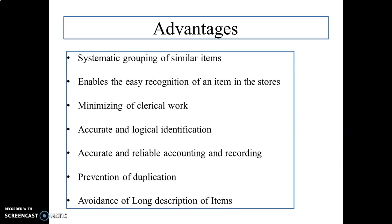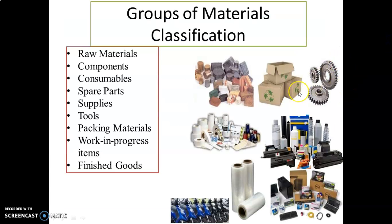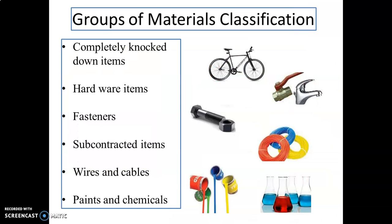Advantages of codification: systematic grouping of similar items enables easy recognition of an item in stores, minimizing clerical work, accurate and logical identification, accurate and reliable accounting and recording, prevention of duplication, and avoidance of long description of items. Groups of materials classification include raw materials, components, consumables, spare parts, supplies, tools, packing materials, work-in-progress items, finished goods, completely knocked-down items, hardware items, fasteners, subcontracted items, wires and cables, and paints and chemicals.